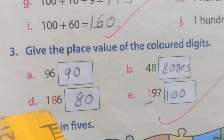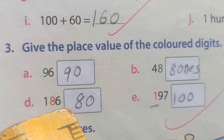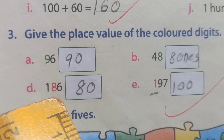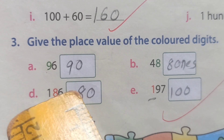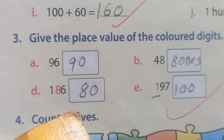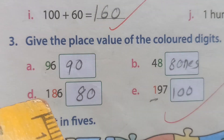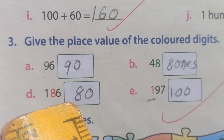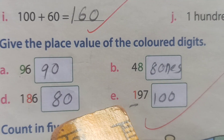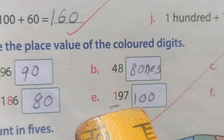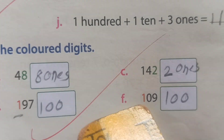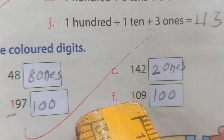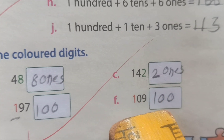D number: 186 — 8 in red color, so 8 place value is 80. E number: 100 — 1 place value is 100. F: 100 — that type we write one number place value as 100.